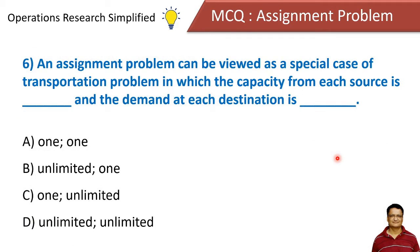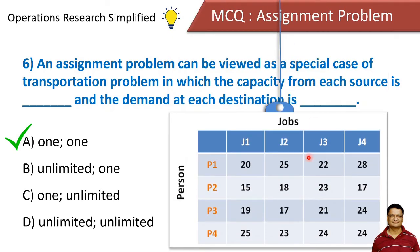An assignment problem can be viewed as a special case of transportation problem in which the capacity from each source is blank and the demand at each destination is blank. The options are: 1 and 1, 1 and unlimited, unlimited and 1, or unlimited and unlimited. The answer is that the capacity of each source is 1 and demand at each destination is 1. There are 4 persons available and 4 jobs available.